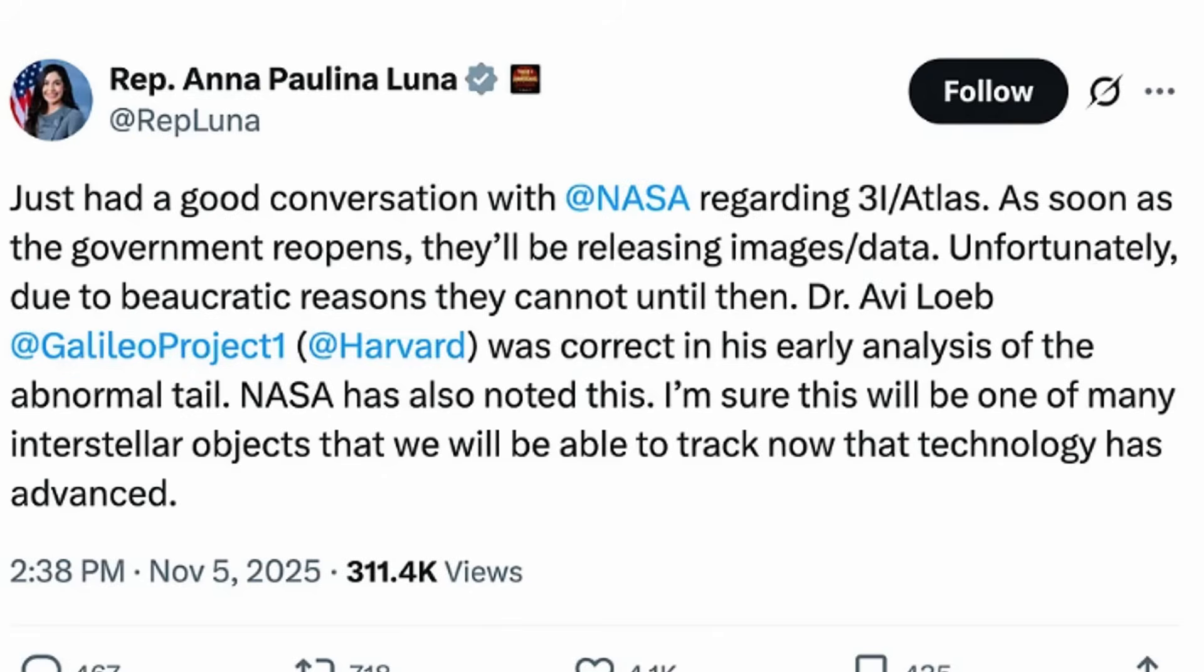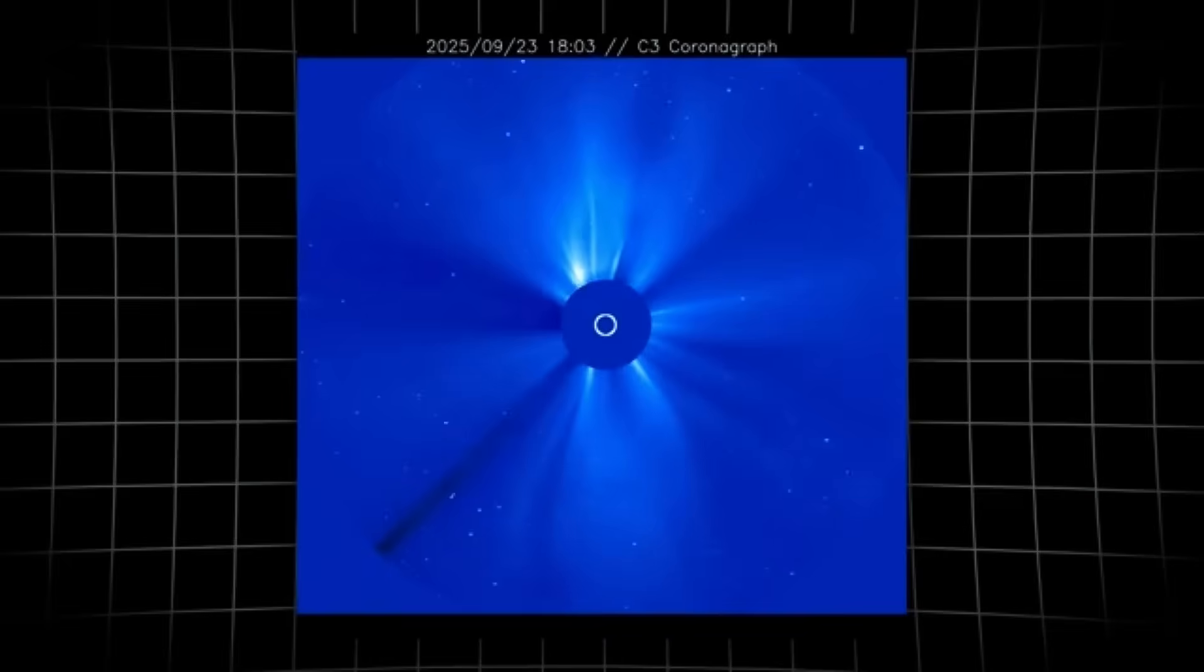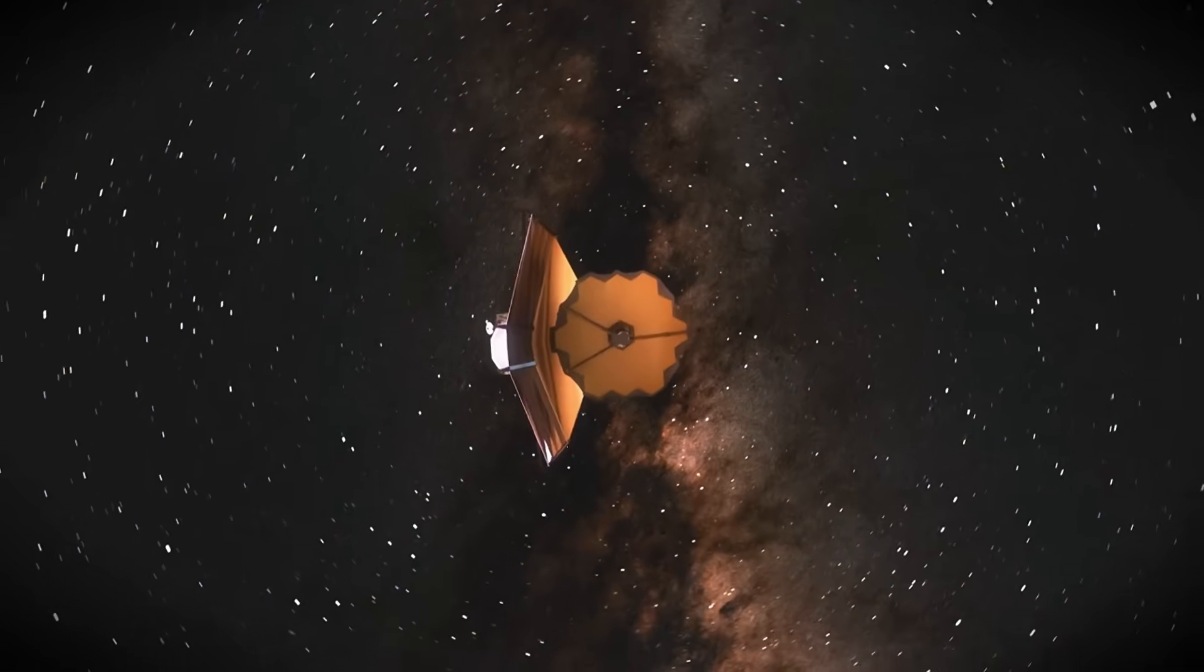This statement is explosive for several reasons. First, it officially confirms that NASA observed the same anomalies that Avi Loeb identified. Second, it suggests there are many more anomalous interstellar objects than the public knows. And third, it admits that crucial data is being withheld for bureaucratic reasons.